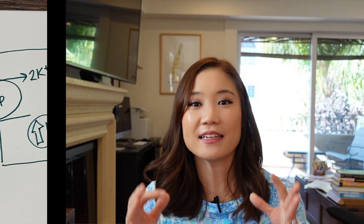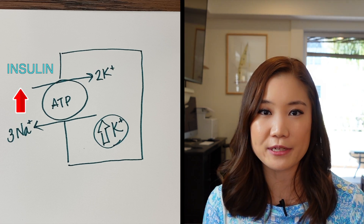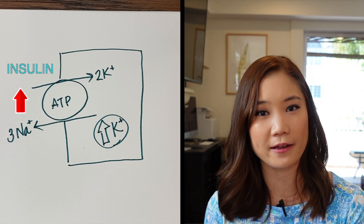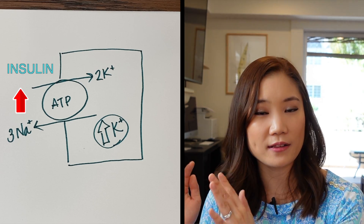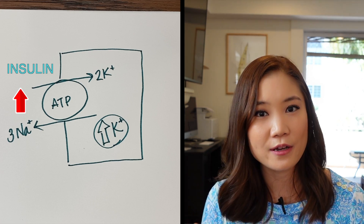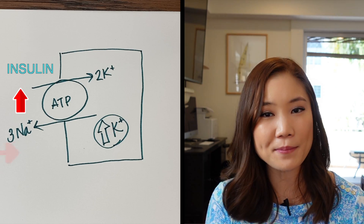For example, after you eat, glucose is absorbed into the blood, then insulin is released from the pancreas. Insulin can increase the activity of the sodium-potassium ATPase pump — which sends two potassium ions into the cell while sending three sodium ions out — so by increasing the activity of this pump, you're sending more potassium from the blood into the cell. This is how the body manages to control the concentration of potassium in the blood after you take in a huge potassium load through a meal.